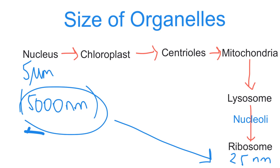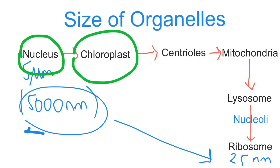The second important topic is which organelles in eukaryotic cells can be seen only by the electron microscope — because they are very small — or can be seen by both light and electron microscopes. Since we've established the size order, it's clear that the nucleus can definitely be seen with the light microscope.